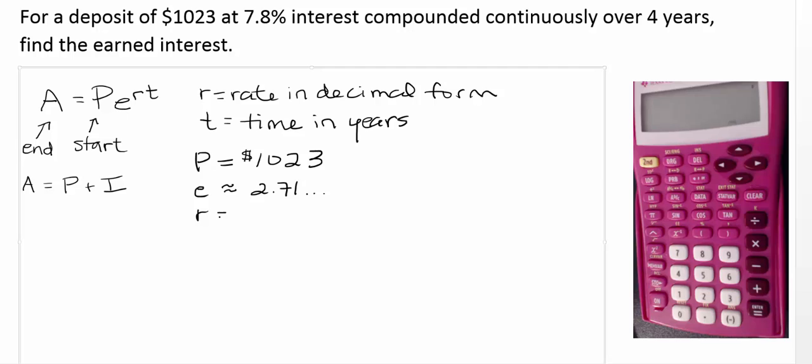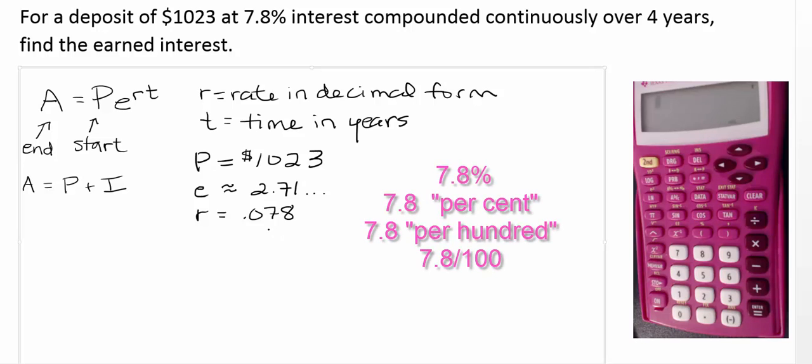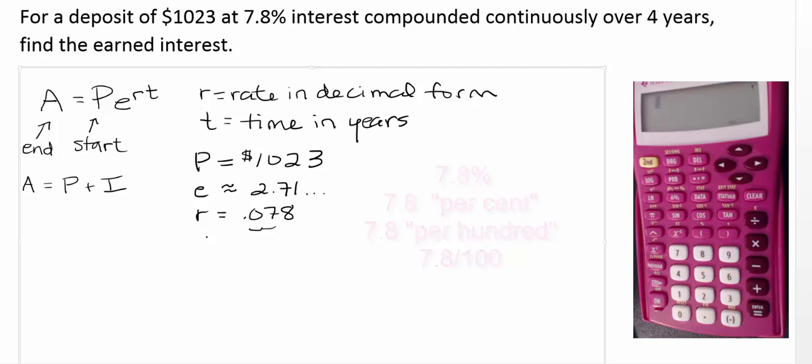And then R, in this case, we're going to write as 0.078. Remember to convert 7.8% to decimal. We just moved that decimal place to the left two places. That's the same as dividing by 100. And percent means per 100. And then time T is equal to 4.